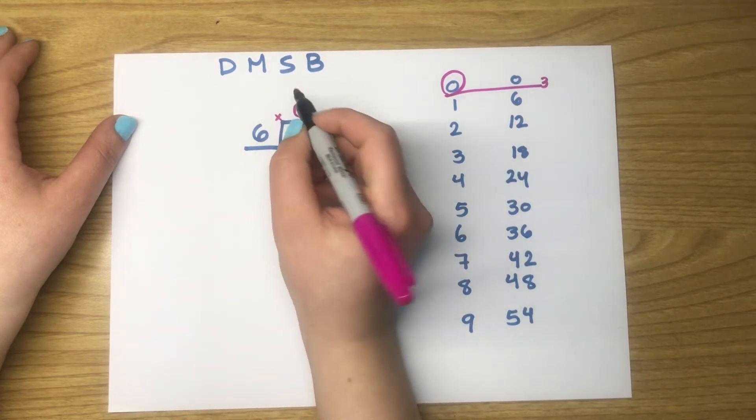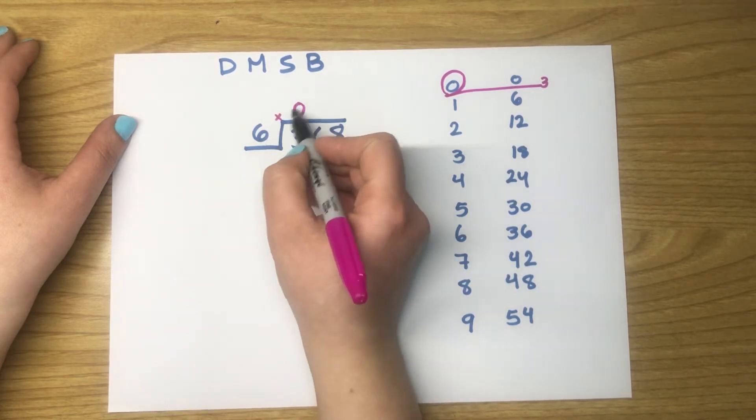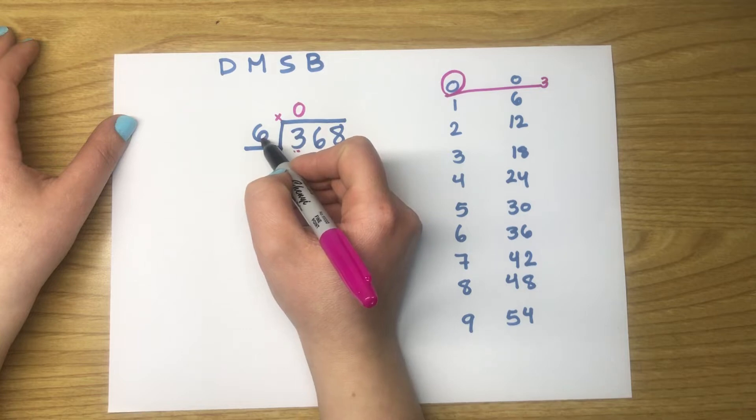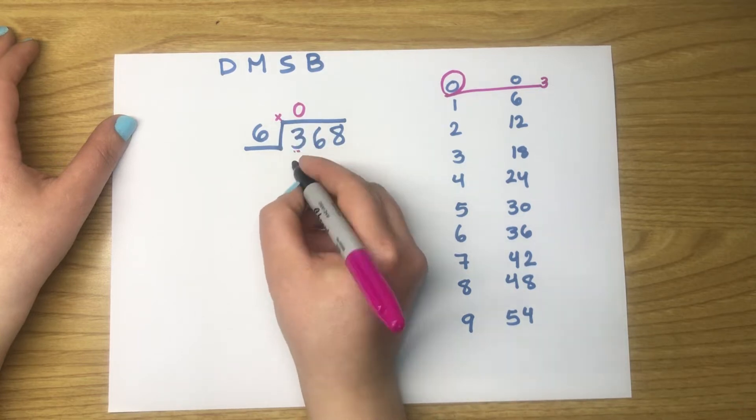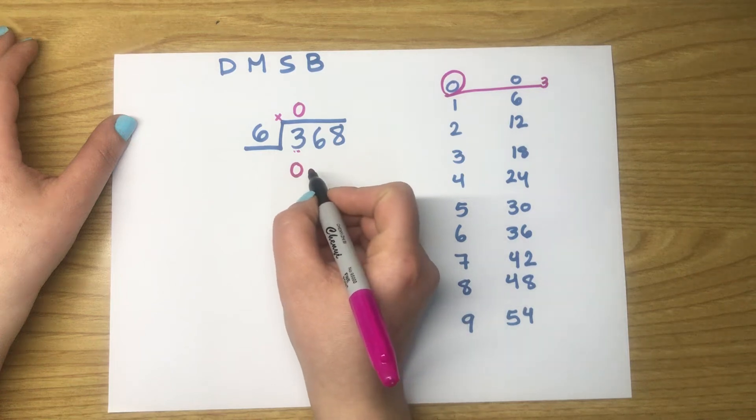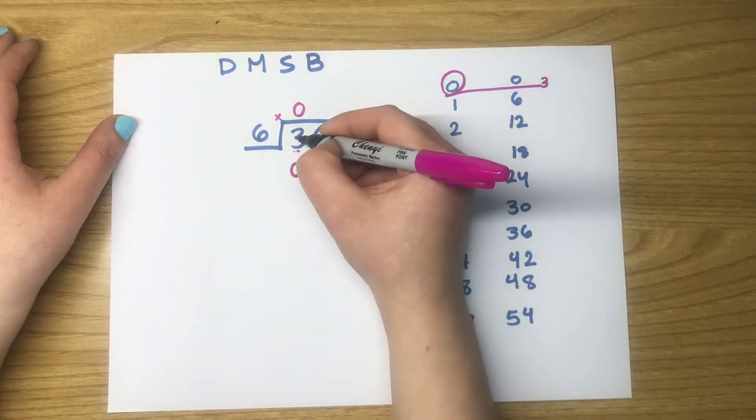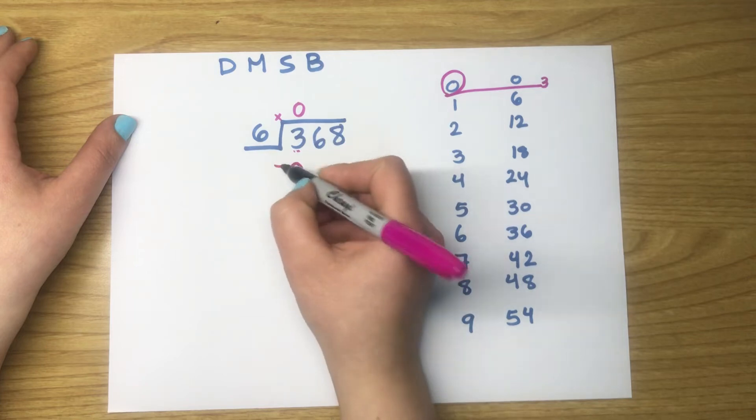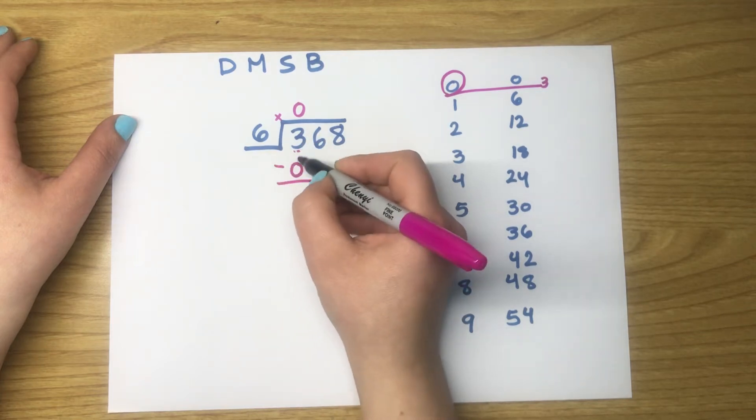Now we have to multiply: 0 times 6 equals 0, and we put the answer underneath 3, the number that we are dividing. Next step, we have to subtract 0 from 3. 3 take away 0 equals 3.